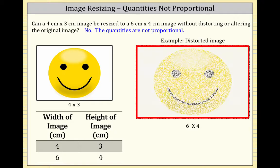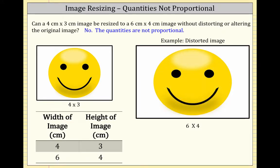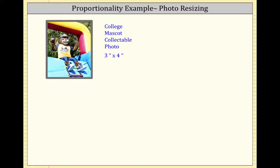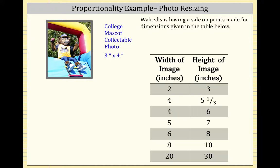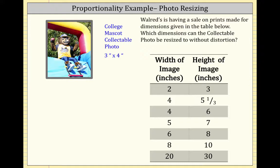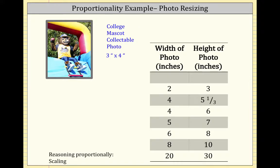If you were to try to resize it, you would end up with the image being distorted, as you see here. Now let's look at another example of photo resizing. Here you see a college mascot collectible photo — this is the Phoenix College mascot called Bumstead — and he comes as a 3-inch by 4-inch photo. Walgreens is having a sale on prints made for the dimensions given in the table below. Which of the images can the collectible photo be resized to without distortion? We'll explore the perspectives of proportionality.